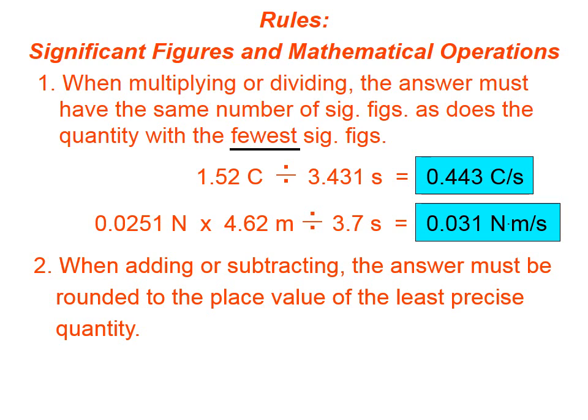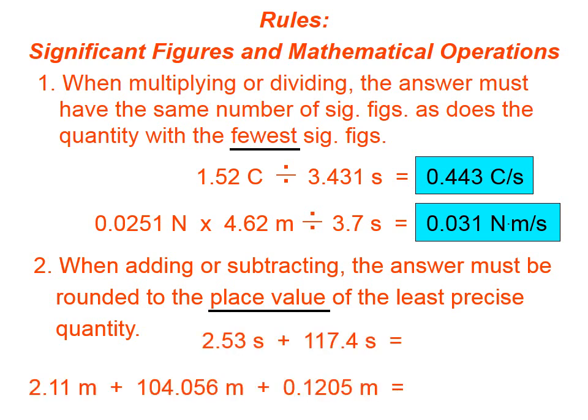The second rule with sig figs and math operations involves addition and subtraction. Now we don't use this rule nearly as often, but we still need to know it because when we do need to use it, we need to use it properly. So rule number two is, when adding or subtracting, the answer must be rounded to the place value of the least precise quantity. In other words, whenever we're adding and subtracting, we're not going to get our fingers out and count up sig figs in this quantity and that one. We're simply looking at place value and that's it.